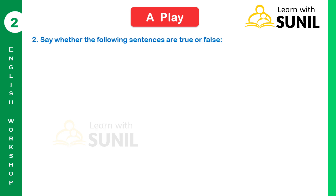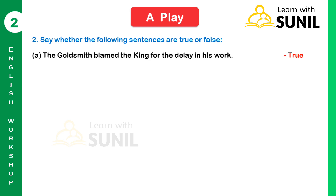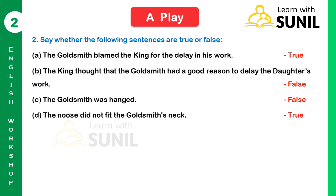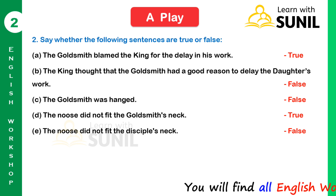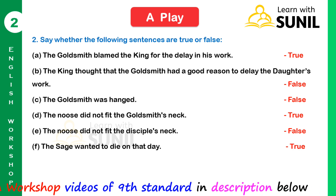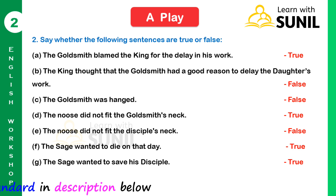Second: Say whether the following sentences are true or false. A) The goldsmith blamed the king for the delay in his work — True. B) The king thought that the goldsmith had a good reason to delay the work — False. C) The goldsmith was hanged — False. D) The noose did not fit the goldsmith's neck — True.